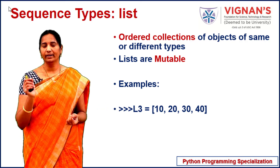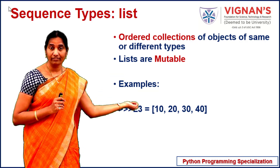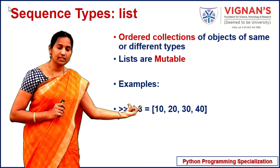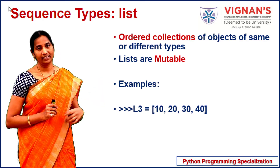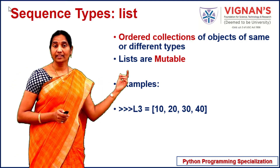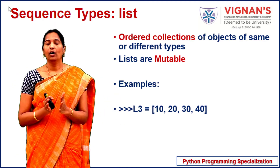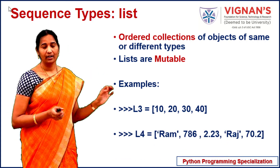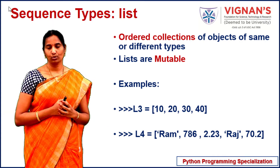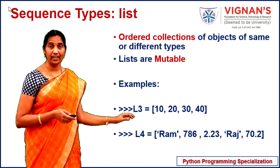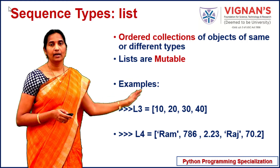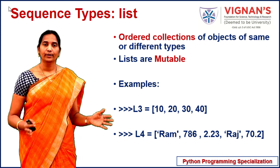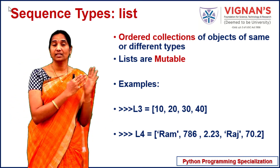Here, l3 is a list storing a collection of elements — 10, 20, 30, and 40 — all of the same type, packed together in a single variable. In a list you are also allowed to store elements of different types. Consider l4, which stores a string, an integer, a floating point number, another string, and another floating point number. That's how you can store a collection of heterogeneous elements in a list.